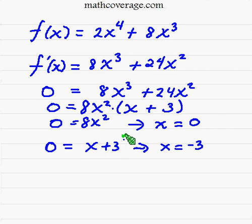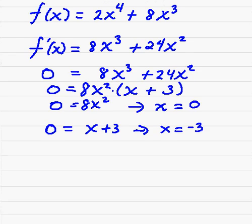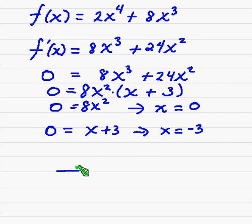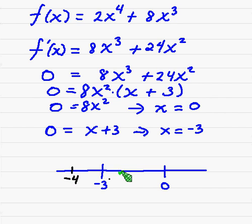Alright, now we want to do another number line, plotting zero and negative 3 on our number line. So we'll put negative 3 here, how about zero here, and now we want to choose some test points like negative 4, about negative 1, and then 1.